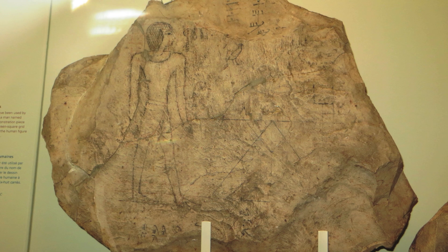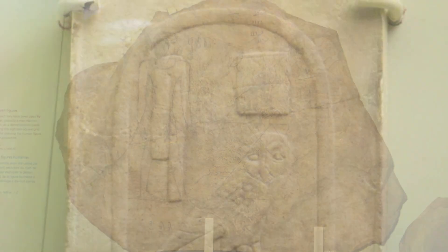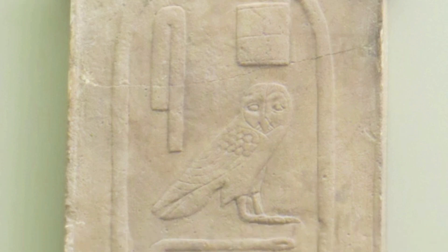Many ordinary people, however, would only be able to read and write their own names, and could recognize the names of their kings, which were written in a loop that we call a cartouche.